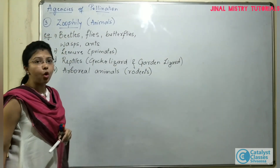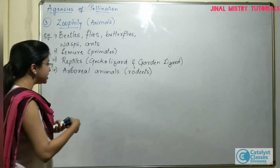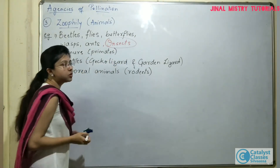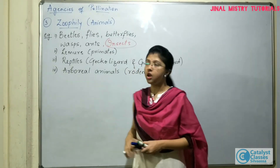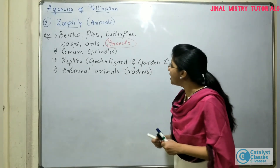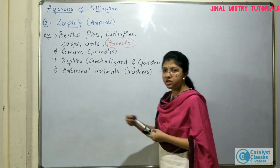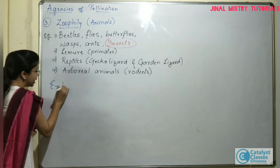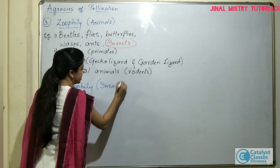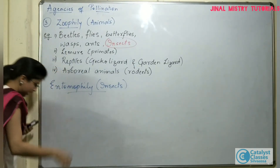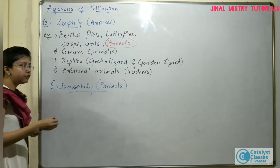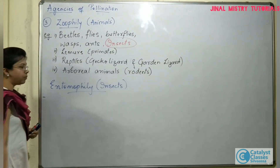As a result, this pollinating mechanism is called as zoophily. Out of all these animals, insects are the group of organisms which are mainly involved as the pollinating agents. Insects are the largest group of animals involved in pollination. And specifically, the pollination which is done by insects is termed as entomophily, that means pollination by insects. These are certain other animals which are basically involved in pollination, but we are going to study the characteristics of those plants and insects which are acting as the pollinating agents.